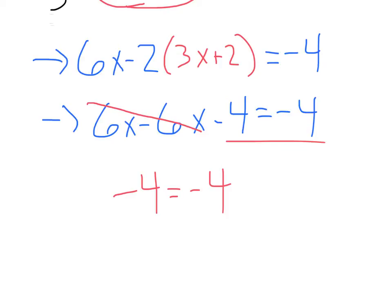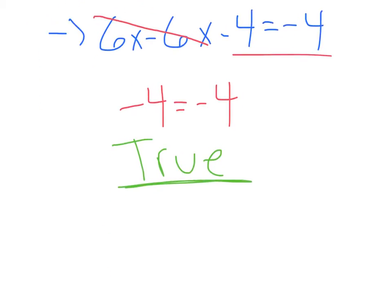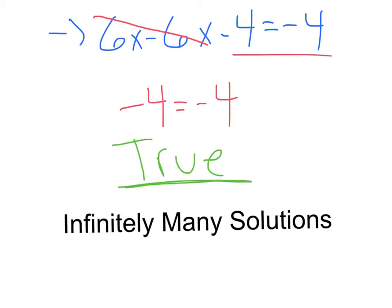We've just got negative 4 equals negative 4. We have no variable to solve for. What this means, in this special case, when you end up with something equal to something, and it is true, negative 4 equals negative 4. Yes. In this case, you have infinitely many solutions.